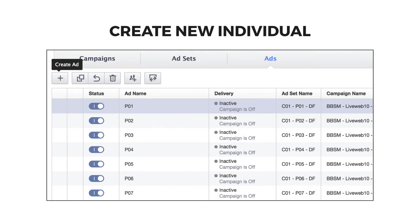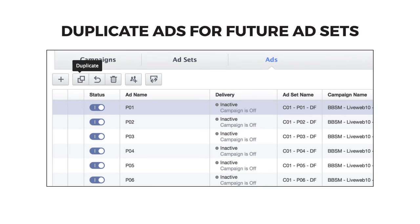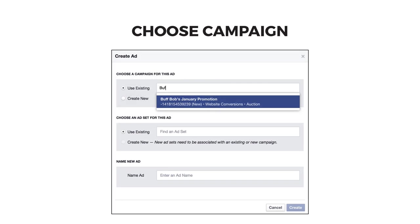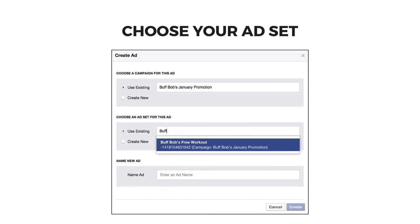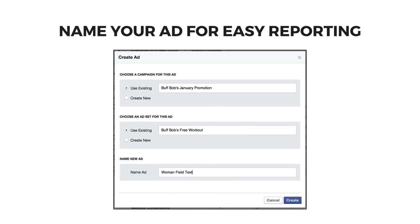Now you're ready to create your ads. Click the ads tab from within the Power Editor and click the plus to create your ad. In the future, use the duplicate button so you don't have to create your ads from scratch, especially if you're wanting to rotate various ads to test which one works the best. Choose the campaign for your ad from the ones you created, then the ad set from the ones you've set up. Name your ad for easy reporting — I recommend naming your ad after the primary feature that sets it apart from the other ads you are going to create.